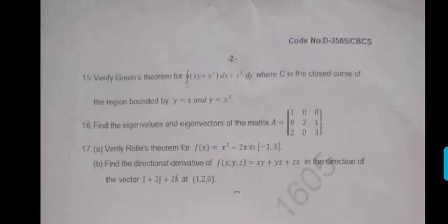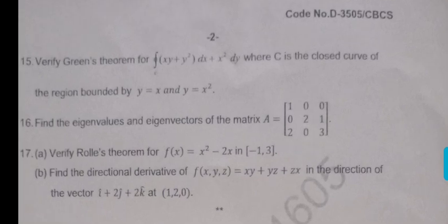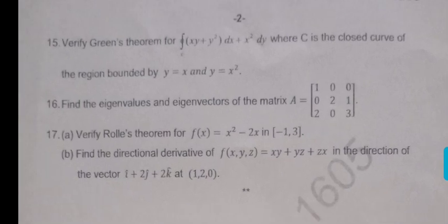Then 16th one is matrices and 17th one is Rolle's theorem. Then 17th B is directional derivative. See the paper, so many topics he covered. In vectors he covered directional derivative, Gauss theorem statement, and Green's theorem. That means you need to practice minimum four units perfectly so that you can write the full paper.